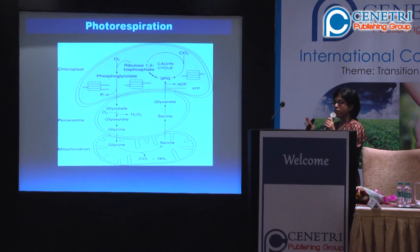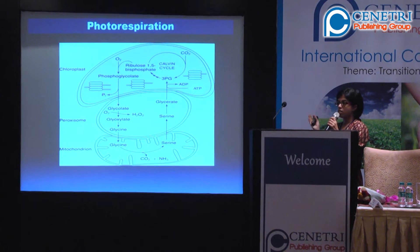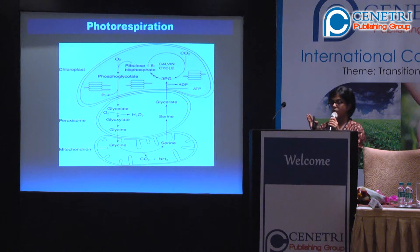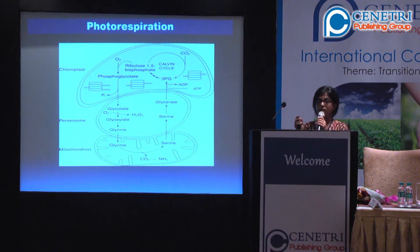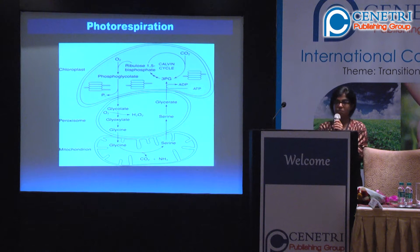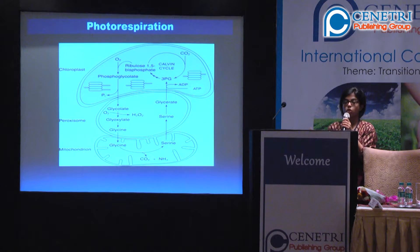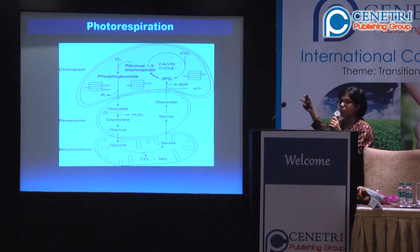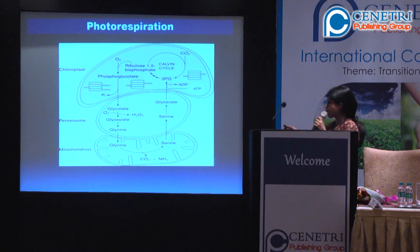That is the reason why there is a difference in the CO2 assimilation efficiency of C3 and C4 plants. When we talk about engineering C3 plants to show C4 photosynthesis, this is the major target, because this is the point where there is a loss in the carbon dioxide assimilation capacity.